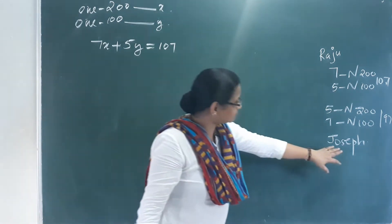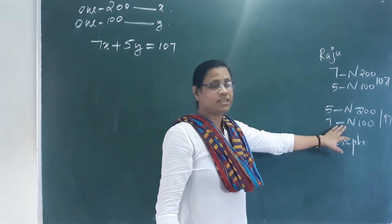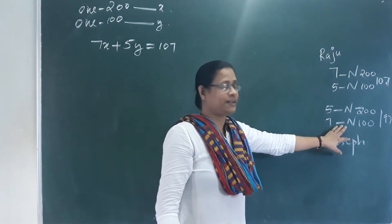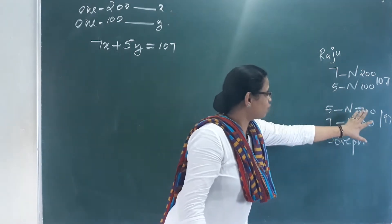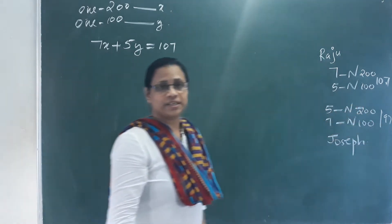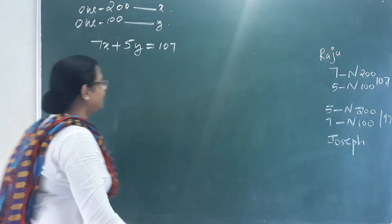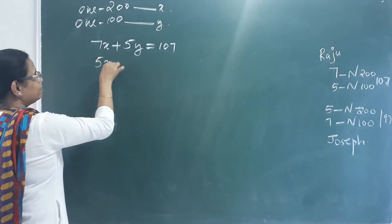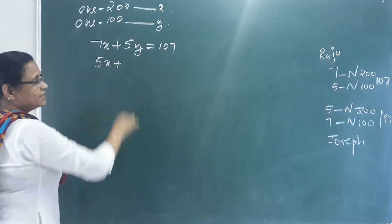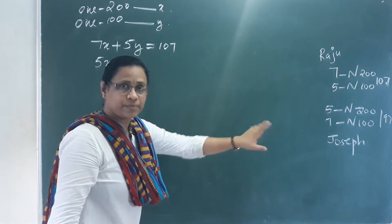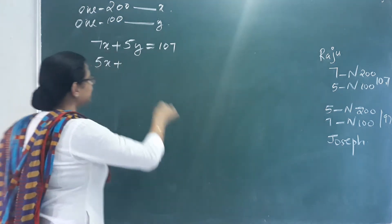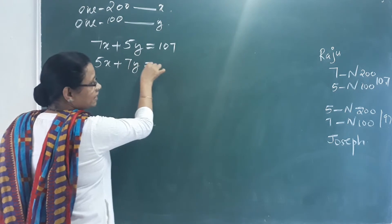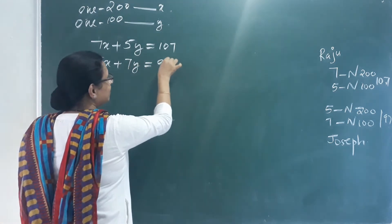Now for Joseph's purchase: 5 notebooks of 200 pages and 7 notebooks of 100 pages. That gives us 5x plus 7y equals 97 rupees. This is our second equation.